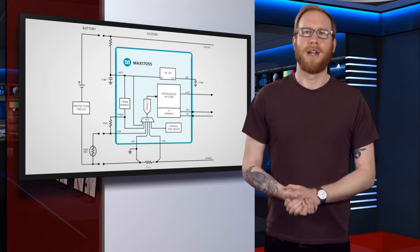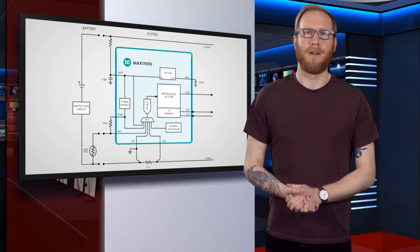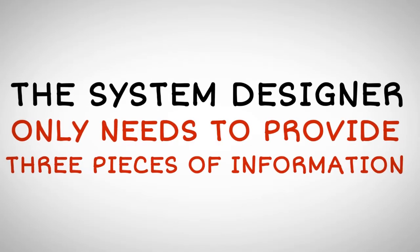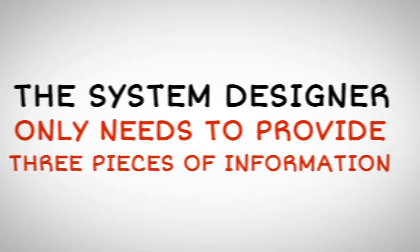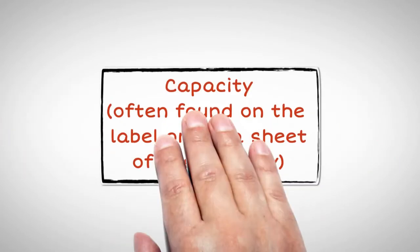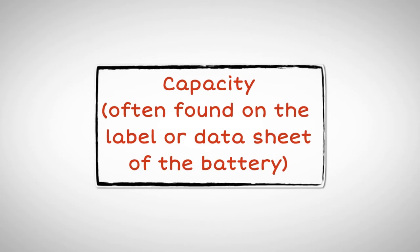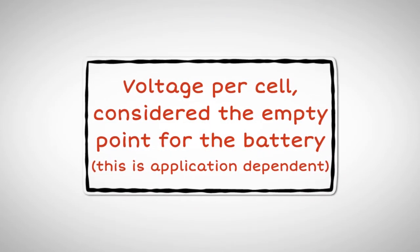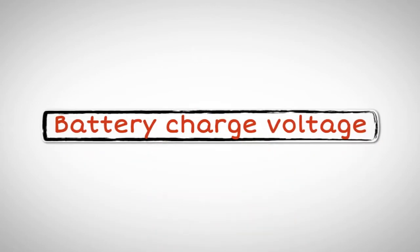Designers can generate battery models using a simple configuration wizard included in the evaluation kit software. The system designer only needs to provide three pieces of information: capacity, often found on the label or data sheet of the battery; voltage per cell, considered the empty point for the battery, which is application dependent; and battery charge voltage.